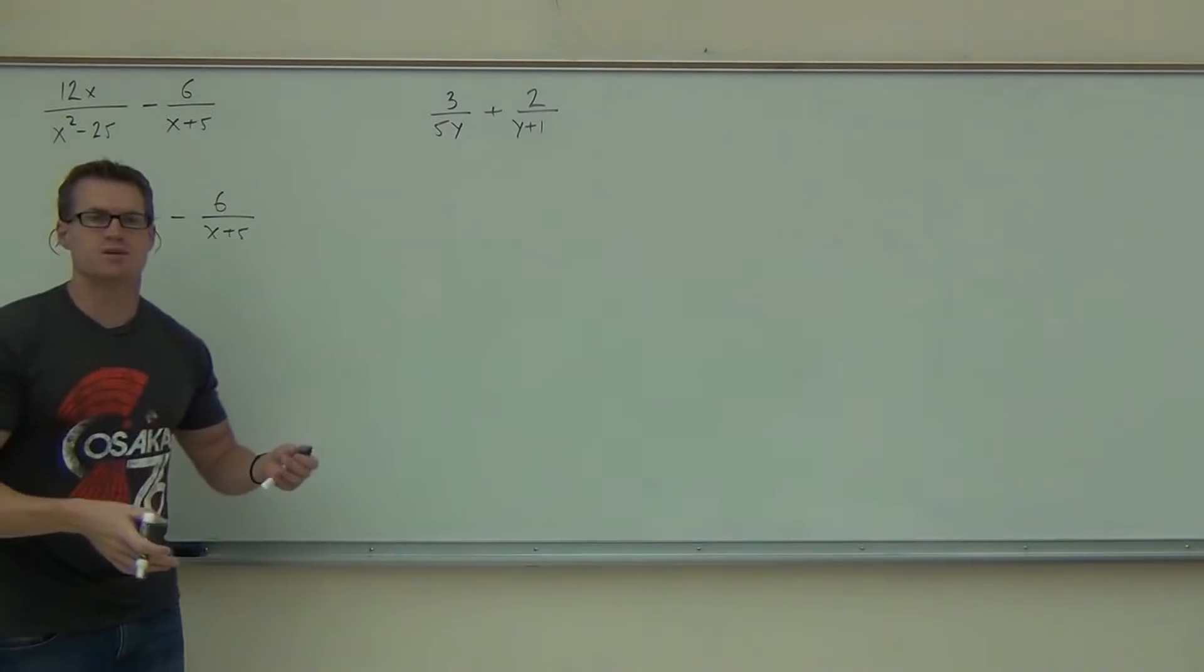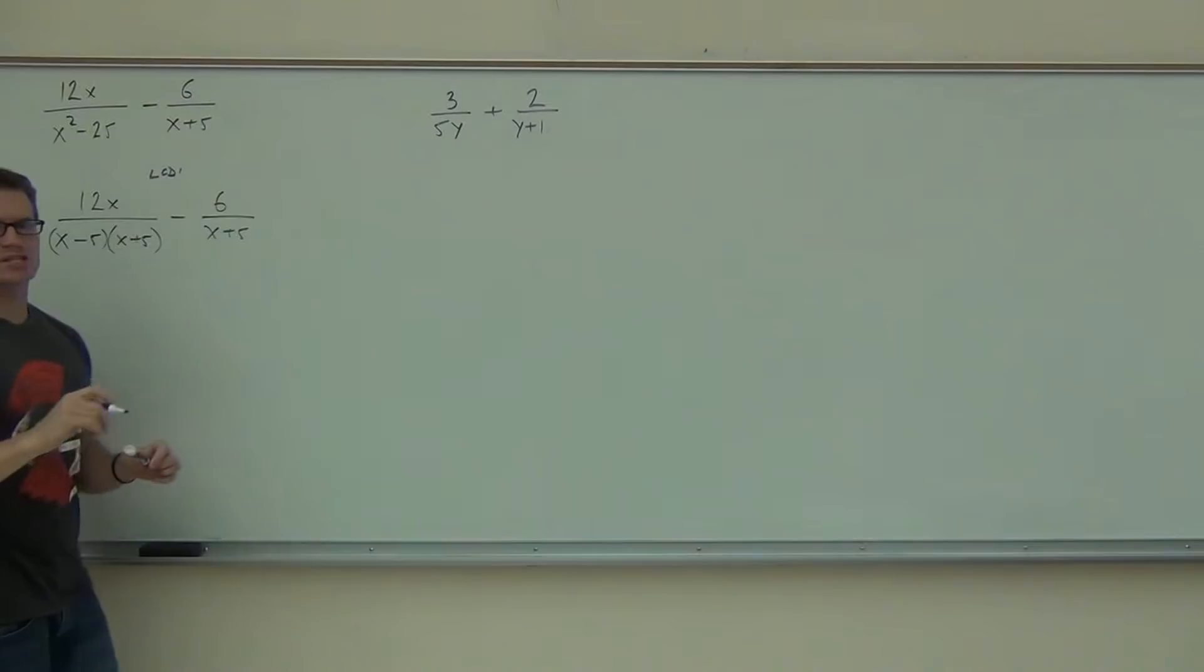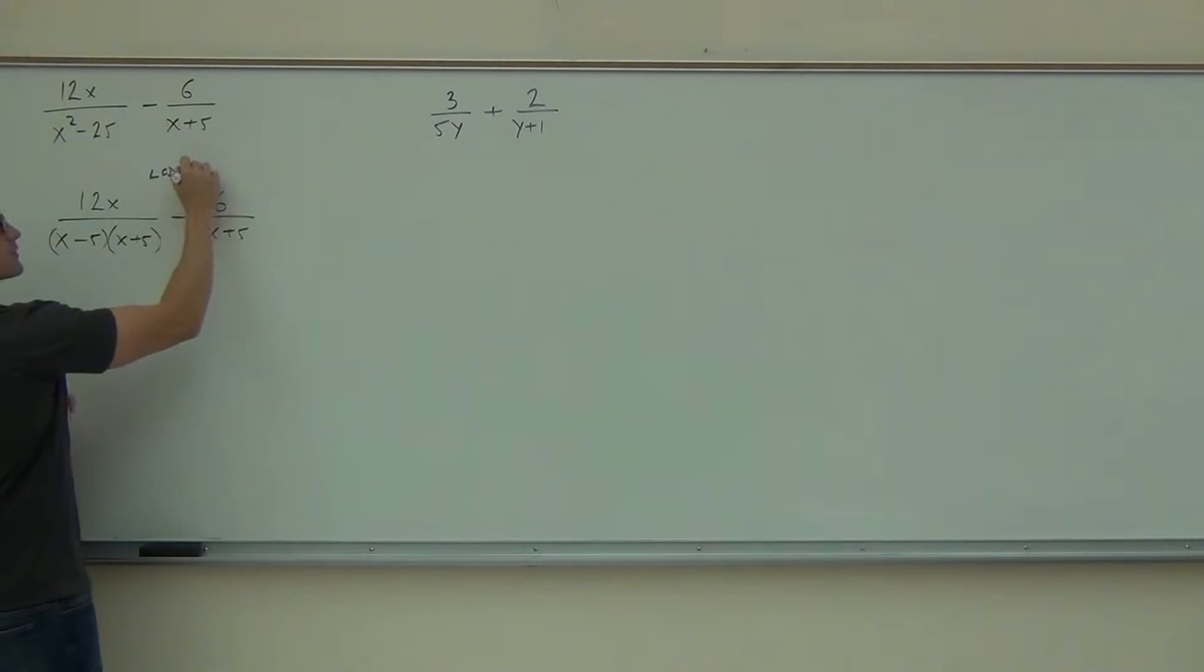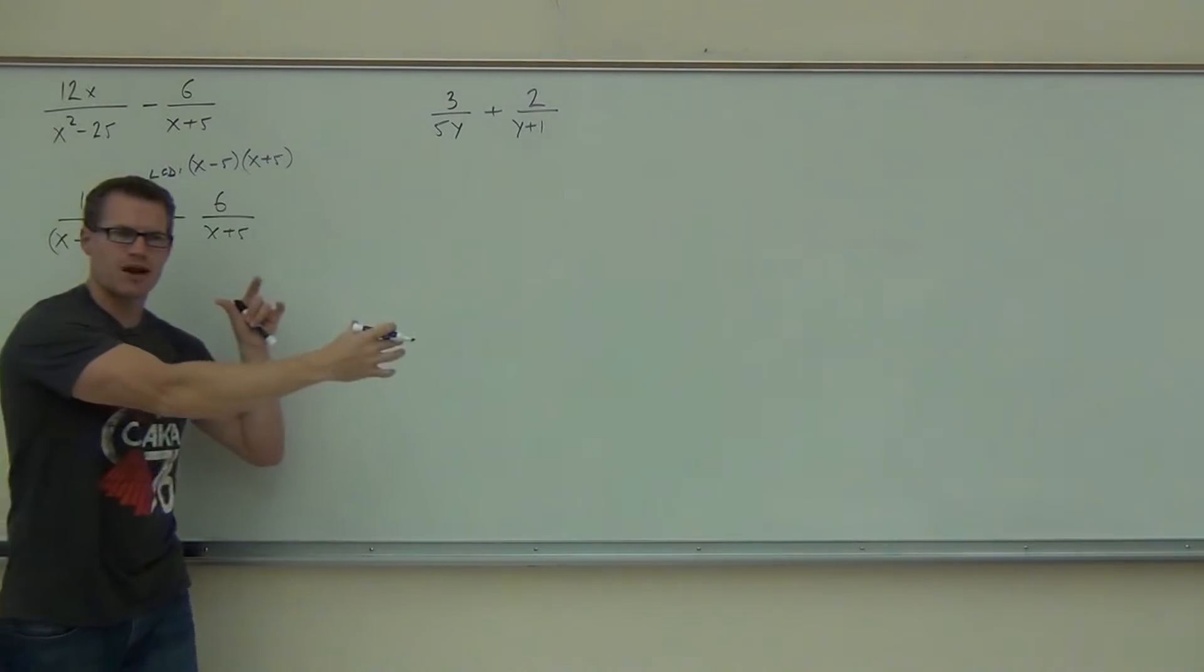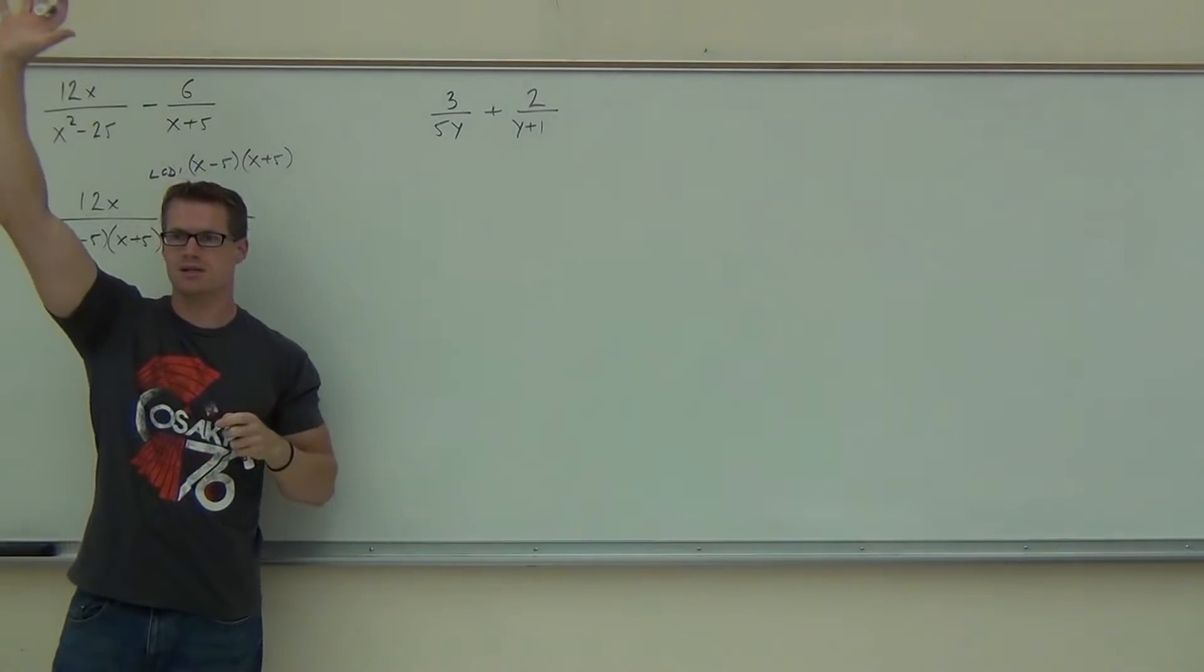Then we go and find our LCD, because we realize right now we do not have a common denominator, and we need one. So our LCD is basically just a listing of all the different factors. So when I look at this thing, I see the X minus 5, I see the X plus 5. And then I have an X plus 5 over here, but because that's in a different fraction, it's already counted. We've already got the LCD. How many people were able to find the LCD? Good.